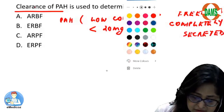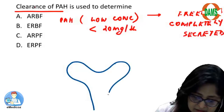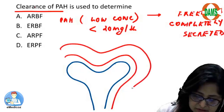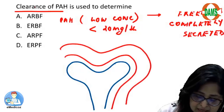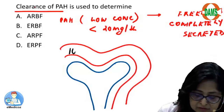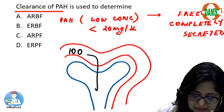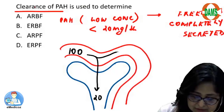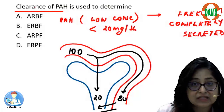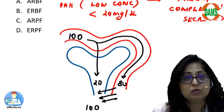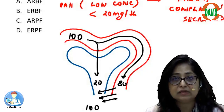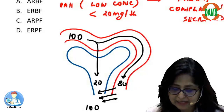If you can see this over here, this is the Bowman's capsule, the afferent arteriole capillaries, and the efferent arteriole. Suppose the amount of para-aminohippuric acid in the afferent arteriole is 100. Twenty percent is filtered and the 80% which is left in the peritubular capillaries is going to be secreted, so that I have 100% in the urine. This is what is meant by para-aminohippuric acid in low concentration being freely filtered and completely secreted.